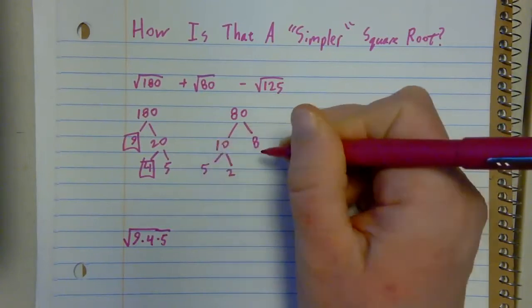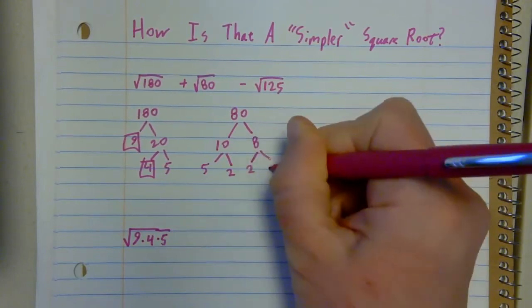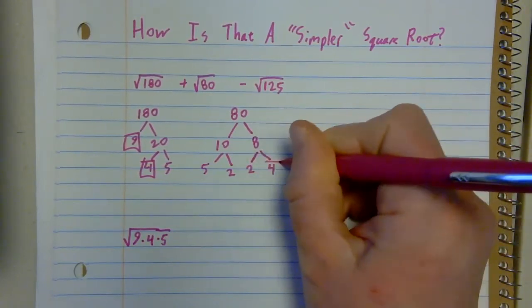Those are both primes, so I must be done. And over here, 8's got a 2 and a 4. 4 is a perfect square.